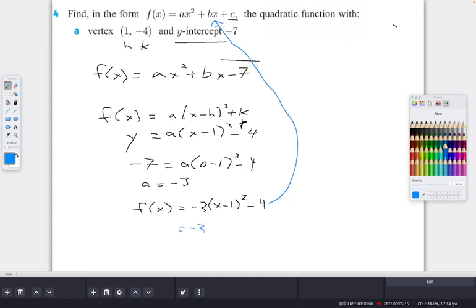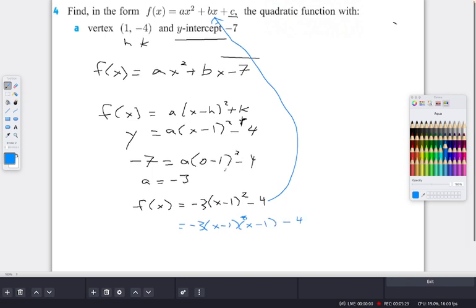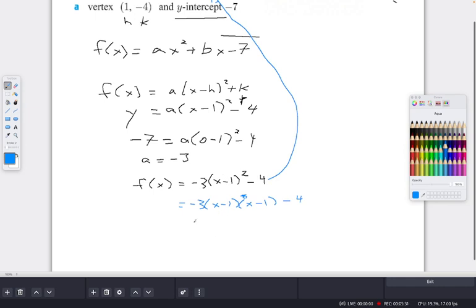So you should just go -3(x - 1)² - 4. And now when you expand it, you'll get back this general form. So you should have negative... let's see if I get this right. Negative 3x squared.